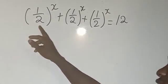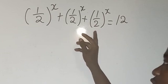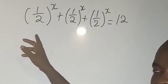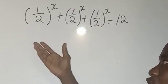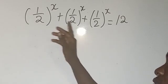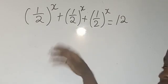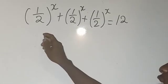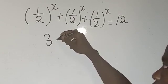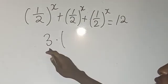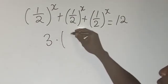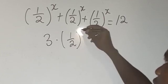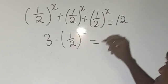This is very simple. Look at the three terms—they are all the same. When you have one mango plus one mango plus one mango, it gives us three mangoes. Therefore, you're going to have 3 × (1/2)^x = 12.